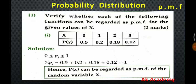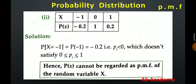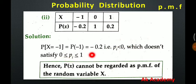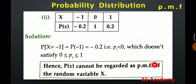Let's move to question number 2. Here the random variable X is -1, 0, and 1, with P(X) equal to -0.2, 1, and 0.2. The probability of X equals -1 is -0.2, which means the probability is less than 0. I said that probability can never be negative, but here the probability is negative, so it cannot be regarded as a PMF of a random variable X.